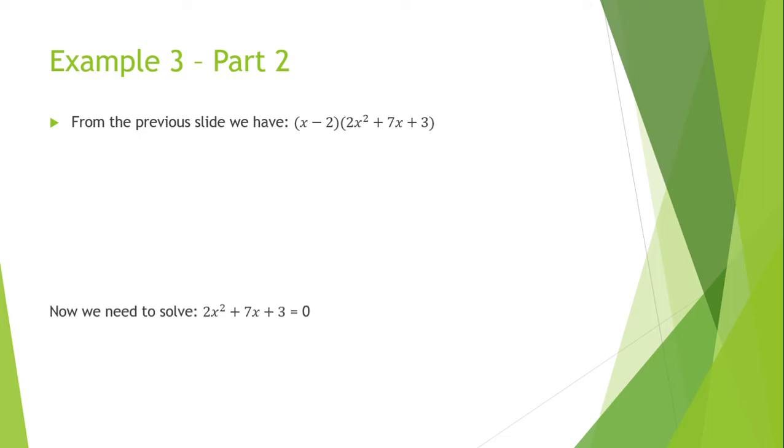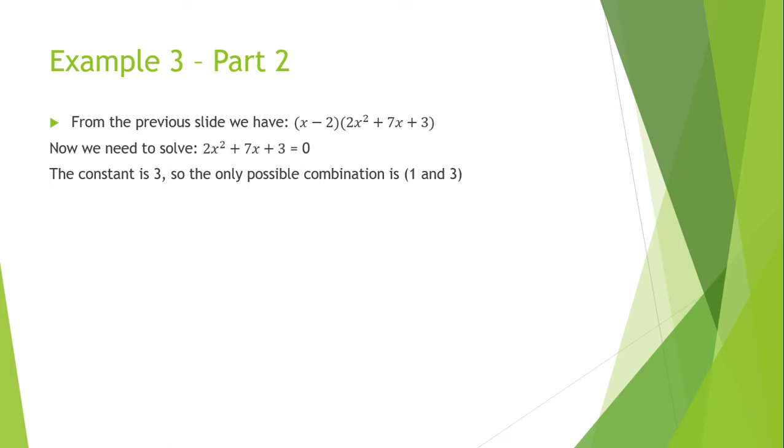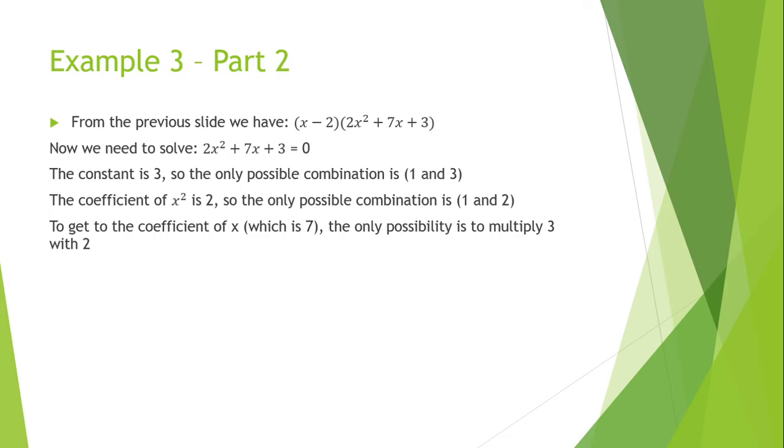So now we need to solve the second bracket because this bracket can still be split up since it's a second degree polynomial equation. The constant is 3, so the only possible combination is 1 and 3, or minus 1 and 3, but in this equation, since the middle part is a large positive, we don't look at the negatives. So the coefficient of the x squared is 2. So the only possible combination is 1 and 2. To get the coefficient of x, which is 7, the only possibility is to multiply the 3 with 2. So if we do that, we get 6, and then multiplying the other remaining two combinations of 1 and 1 will get us to 7. Therefore, splitting up the above equation, we get to 2x plus 1 multiplied by x plus 3.